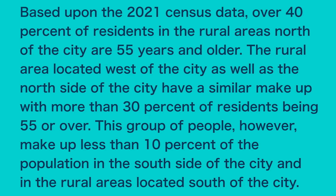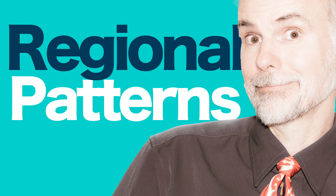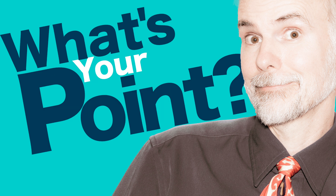Based on the 2021 census data, over 40 percent of residents in the rural areas north of the city are 55 years and older. The rural area located west of the city, as well as the north side of the city, have a similar makeup with more than 30 percent of residents being 55 or over. This group of people, however, makes up less than 10 percent of the population in the south side of the city and in the rural areas located south of the city. The middle section of your description and analysis identifies the regional patterns present in the choropleth map, which brings you to your call to action.